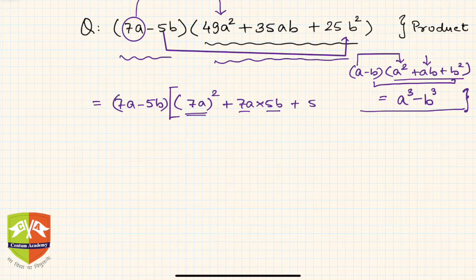Now this matches with our identity. So this is our a, this is b. This is clearly a square, this is a times b, and this is b square, isn't it? So we have got our identity.